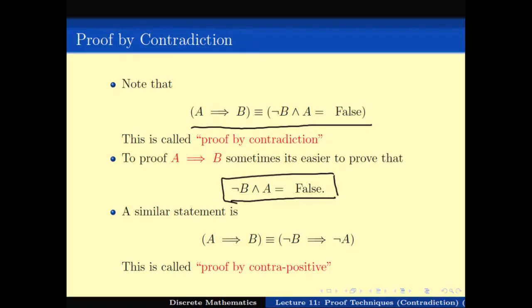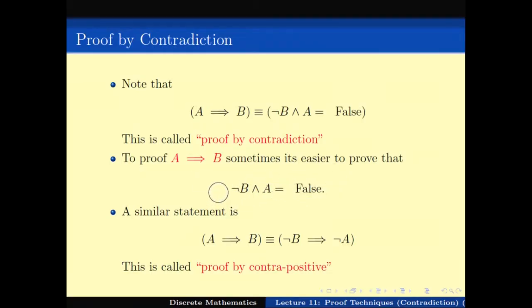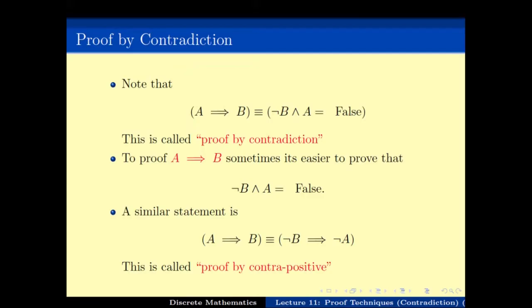In other words, you view the problem in a different way. Instead of viewing the problem as A implies B, you view it as not-B and A is false. A similar statement is what we call proof by contrapositive, which we will do in the next video lecture. In the last class we saw an application of this proof technique to prove that there are infinitely many primes.